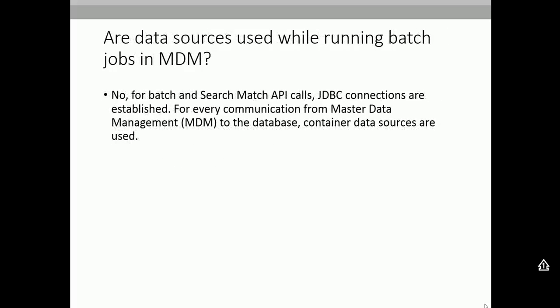Are data sources used while running batch jobs in MDM? This is an interesting question. Whenever you install Informatica MDM in the application server, data sources get created — but are they used when you run a load job? The answer is no. For batch jobs and search-match API calls, JDBC connections are established directly. Data sources are only used for communication from the MDM hub to the database container. So for batch jobs, data sources are never used; JDBC connections are created instead.